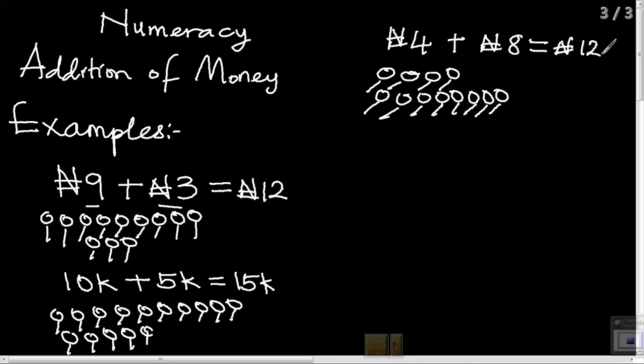Another example: we have 5 Kobo plus 1 Kobo. Let's count the 5 using circles to represent it: 1, 2, 3, 4, 5, and 1. Let's count it together: 1, 2, 3, 4, 5, 6. 5 Kobo plus 1 Kobo gives 6 Kobo.